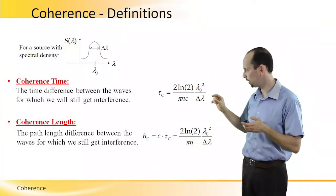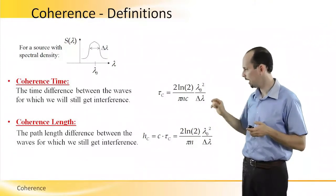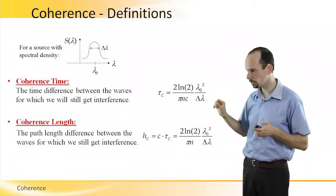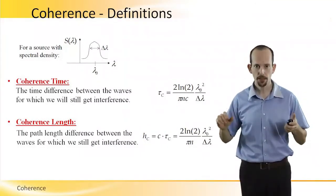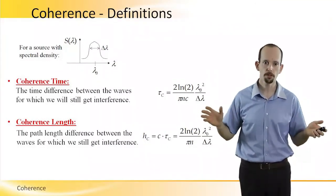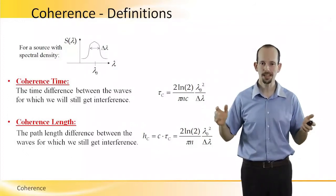This source has a central wavelength of lambda zero and a spectral bandwidth of delta lambda. The coherence time is defined as the time difference between the waves for which we will still get interference.